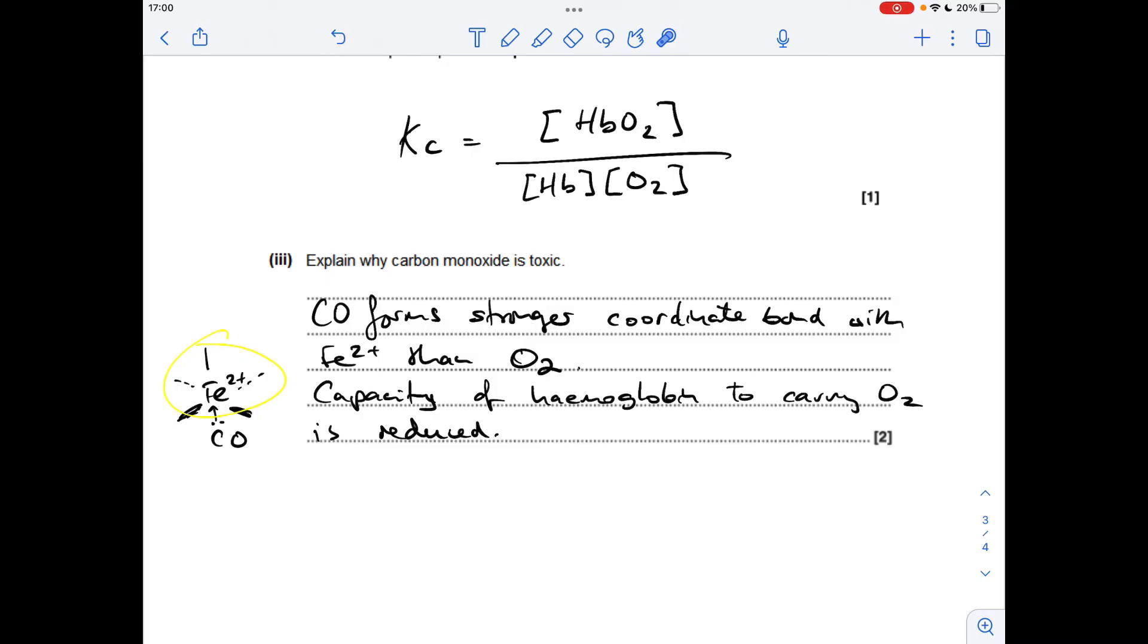Finally, explain why carbon monoxide is toxic. I've got my little diagram back again, but I've swapped the O2 ligand for CO. This coordinate bond is much stronger with the CO ligand than the O2, so because of that the carbon monoxide stays on, which means the haemoglobin has less capacity to carry oxygen.